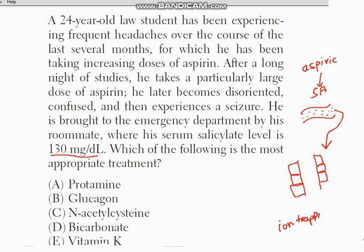In the ion trapping mechanism, if there is an acidic molecule in the blood, we make the urine basic. And if a basic substance is increasing in the urine, we make it acidic. There is a fusion of these two molecules, which increases the elimination of the respective molecule.